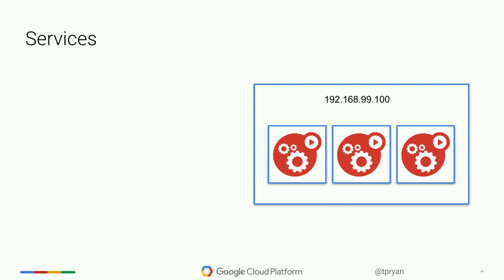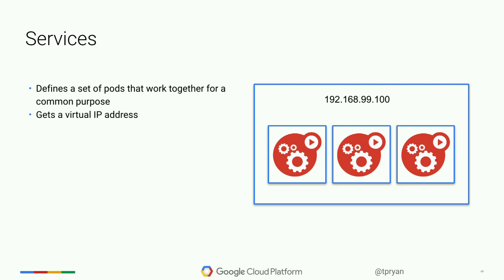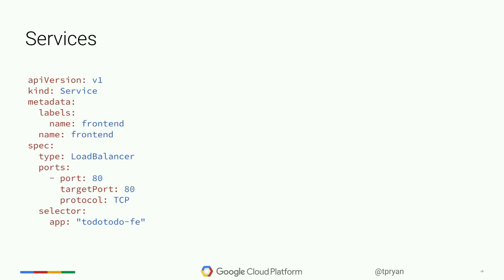Services: we've got all these ephemeral pods and we don't care about any individual pod. Services map which pods are providing a given service. Services get a virtual IP address and the DNS server inside Kubernetes will match whatever you name the service to the machines serving it. Services are also useful for exposing Kubernetes services to outside clients — a load balancer service gets a public IP address that is load balanced across all the containers.